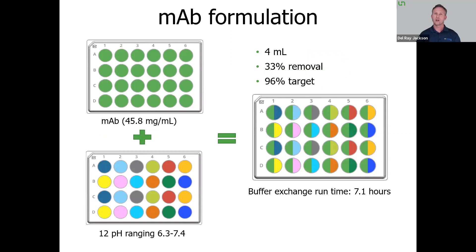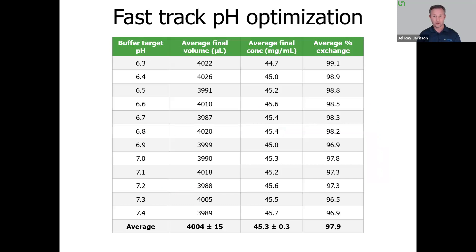First, let's look at how well BigTuna works with protein concentration and buffer exchange. Working with proteins, formulation often involves finding just the perfect set of conditions for your storage buffers. Here we have an example of taking monoclonal antibodies and doing a pH study to see which condition was optimal. The buffer exchange was run over 12 different samples in 7.1 hours — but that's 7.1 hours of free time, unlike a manual method where you need to go back to it. The target final concentration was 45.8 mg/mL, and BigTuna delivered results right on point, with a buffer exchange percentage that's right on target.